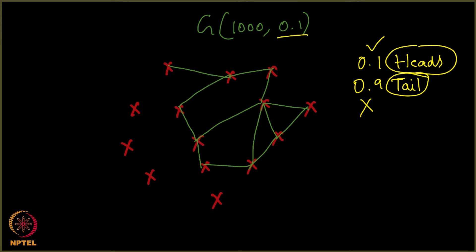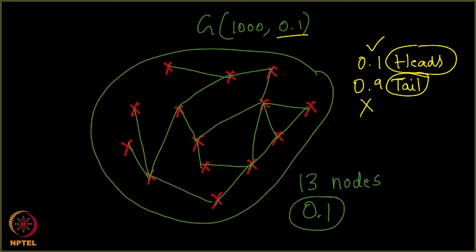Assume I got a network something like this right. This will be my final network and this is my graph G with probability, how many nodes are here 1, 2, 3, 4, 5, 6, 7, 8, 9, 10, 11, 12 and 13 nodes. This is a graph 13 nodes and edge probability is 0.1 which means I toss a coin with probability of it being heads is 0.1 and tail being 0.9. I put an edge if I get a head. I do not put an edge if it is a tail. I repeat this process for every possible edge on this 13 node graph okay.